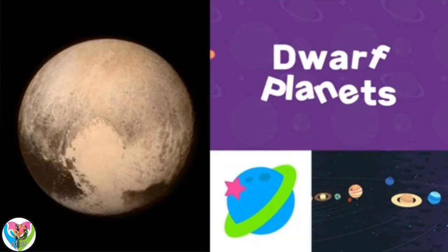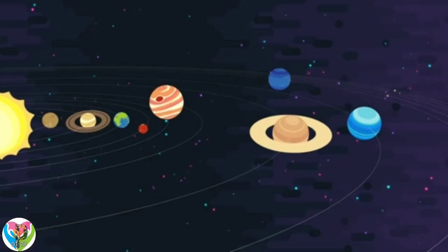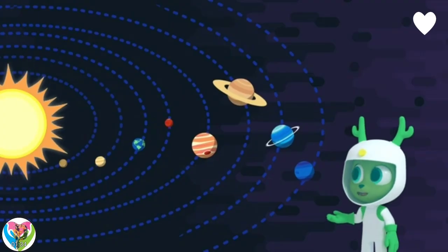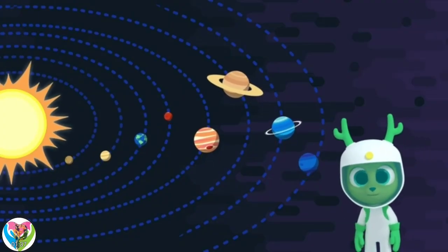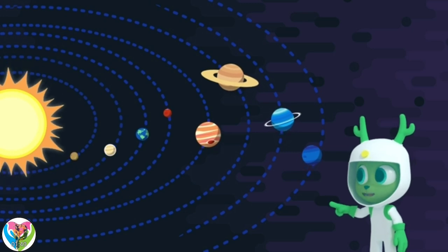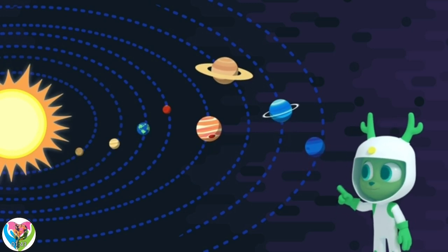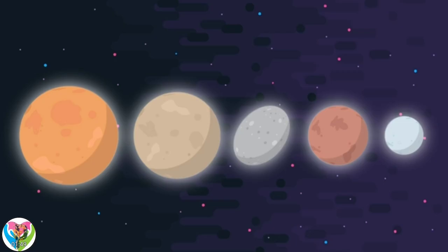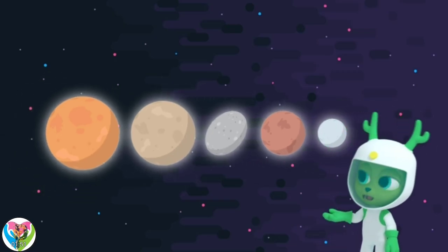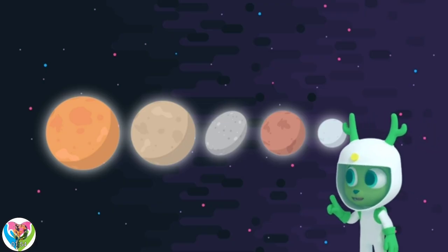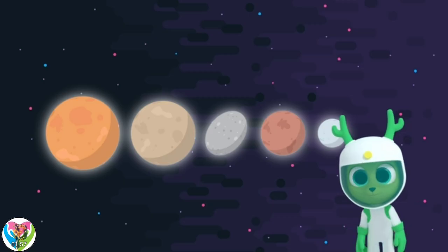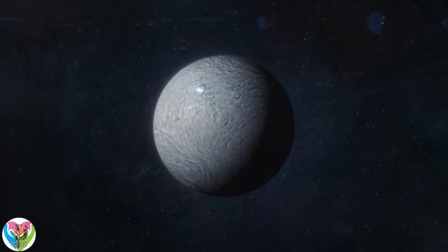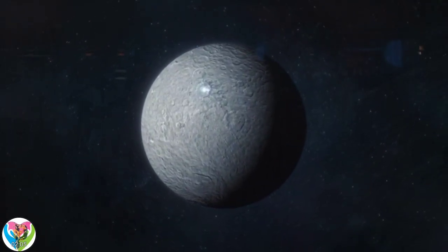Dwarf planets. Those are the eight planets in our solar system. Do you know their names, Chester? Mercury, Venus, Earth, Mars, Jupiter, Saturn, Uranus, Neptune. And what about these? Hmm, they look like planets too, but I've never seen them before. Those are called dwarf planets. They're just like the other planets in our solar system in that they only orbit the Sun and have a rounded shape.